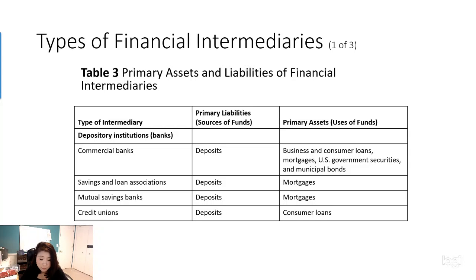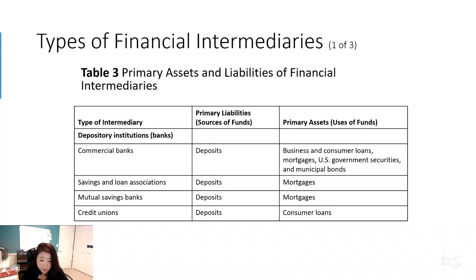What's the main difference? For these institutions, they don't have time deposits, whereas commercial banks do offer time deposits. Savings and loan associations and mutual savings banks usually use the money to fund residential housing — that's the main difference. Nowadays, the regulations on savings and loan associations and mutual savings banks have been loosened, so you won't see a clear boundary between them and commercial banks.